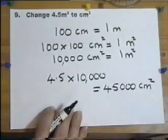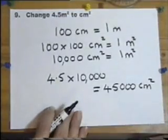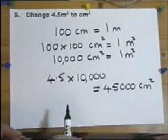You multiply by a hundred. But to change square meters to square centimeters, you need to multiply a hundred hundreds - in other words, ten thousand.